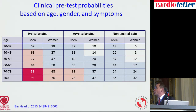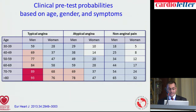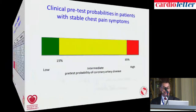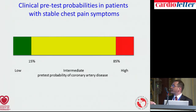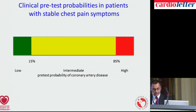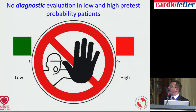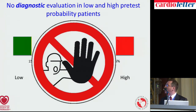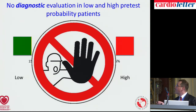It depends which modalities you use — there can be four or even five categories for pretest probabilities. In the older guidelines, we only had a low probability of 0 to 15%, an intermediate probability of 15 to 85%, and a high probability of more than 85%. Patients with a low pretest probability of coronary artery disease should not undergo any further testing for diagnostic reasons.